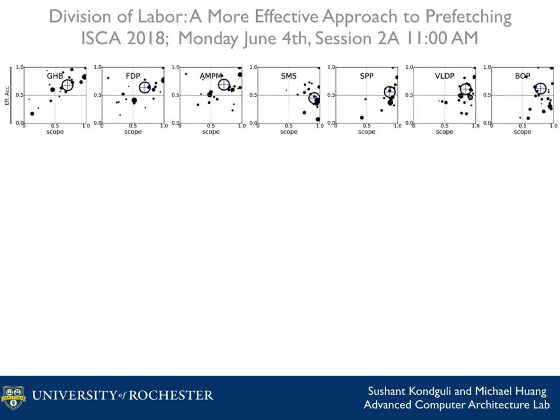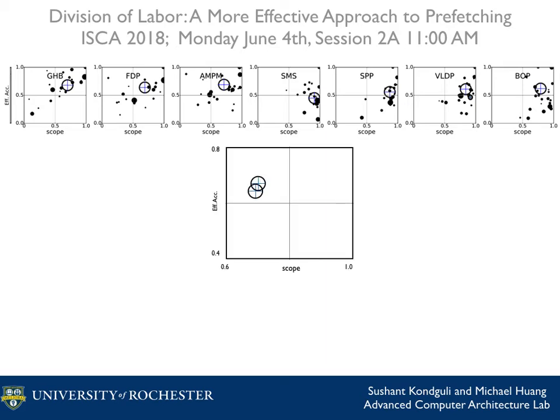In this plot, we show prefetching scope and effective accuracy of a few prefetchers for different applications. The average is shown by a big circle with crosshairs. If we take the per-prefetcher average and put them in one plot, we can see that the increase in scope is associated with a decrease in prefetching accuracy. Some of this decrease is understandable, as we target patterns that are more difficult to predict.